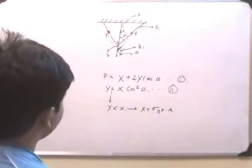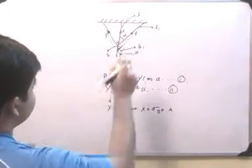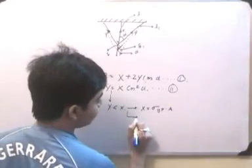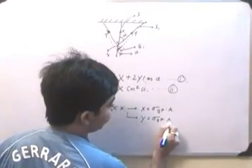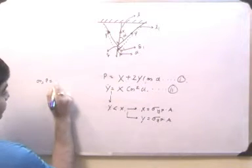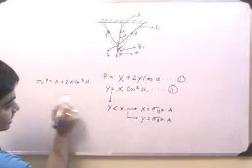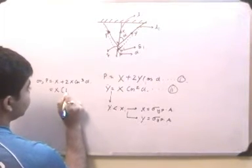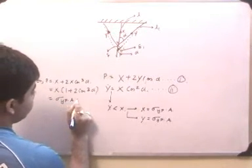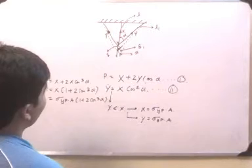As we increase the load further, there will be plastic deformation in the vertical bar, and y (the inclined bar) will take more load since it is still in the elastic zone, until it also reaches its yield point. So y will essentially also equal sigma_yp times A. Substituting Equation 2 into Equation 1, P equals x plus 2y·cos alpha, which gives P equals sigma_yp times A times (1 plus 2·cos² alpha).